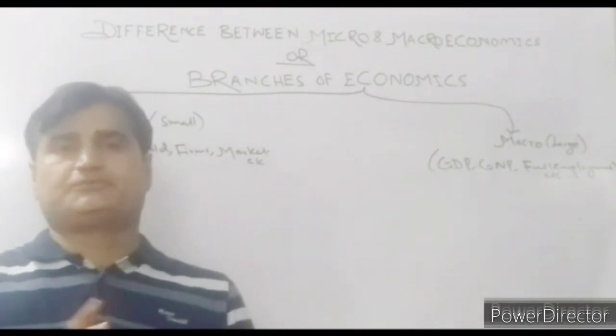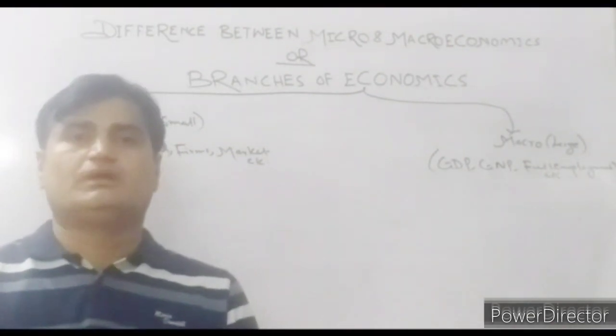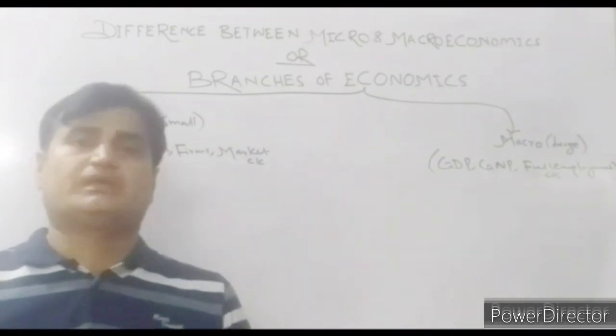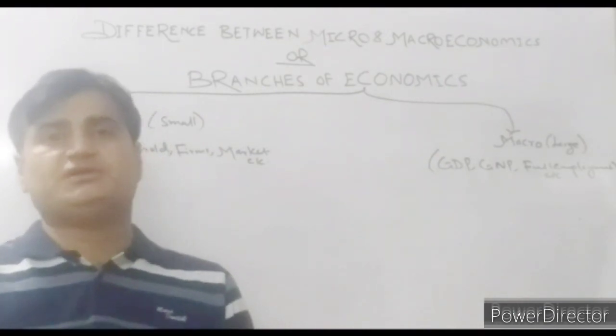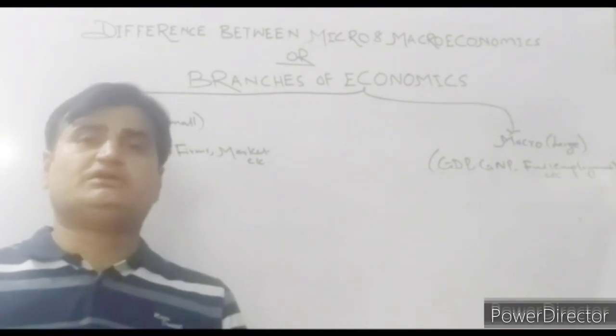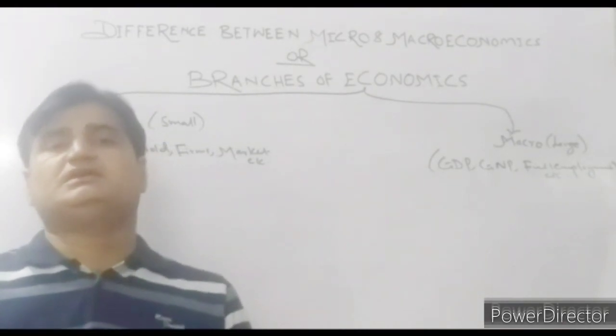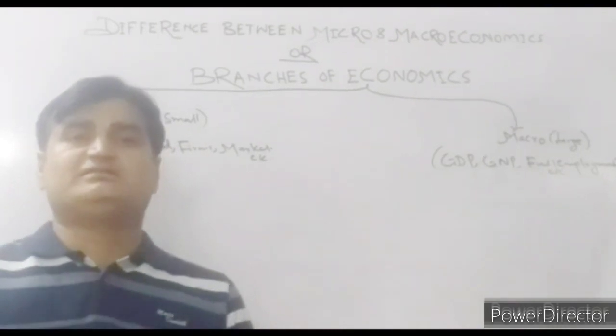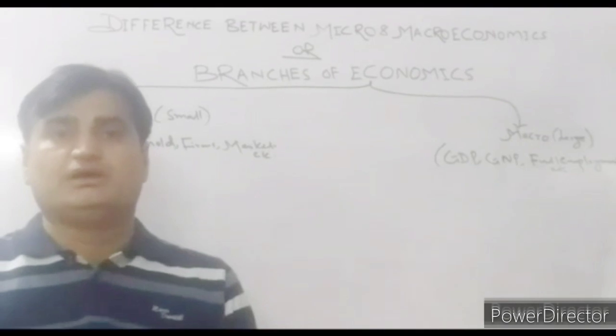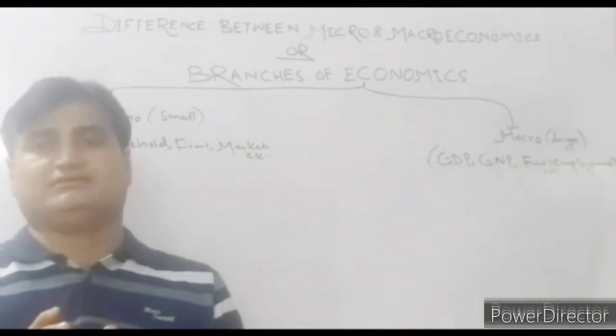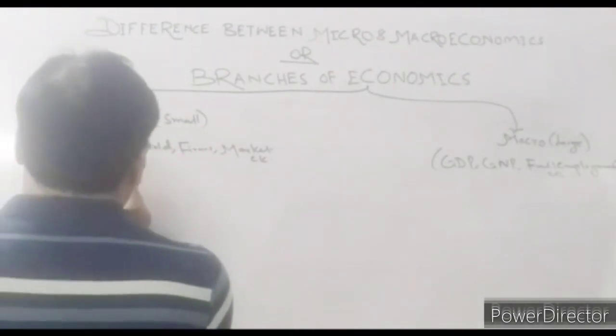Microeconomics helps in determining the equilibrium in partial market, in individual market. It means the market equilibrium helps in determining what to produce, how much to produce, for whom to produce. It decides the output and price.